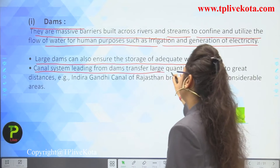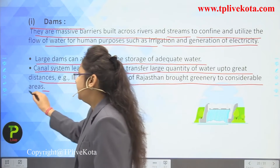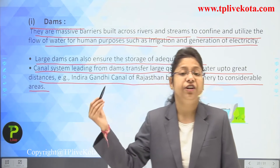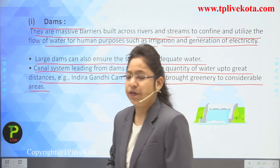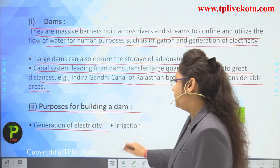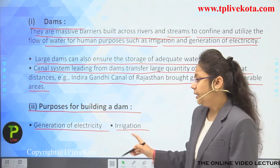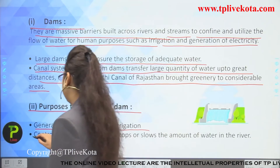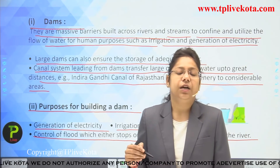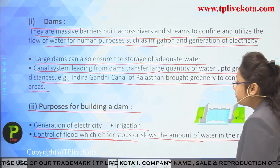Canal systems leading from dams transfer large quantities of water over great distances — for example, the Indira Gandhi Canal of Rajasthan brought greenery to considerable areas. The purposes for building a dam are: generation of electricity through hydropower plants, irrigation, and control of floods, which either stops or slows the amount of water in rivers.